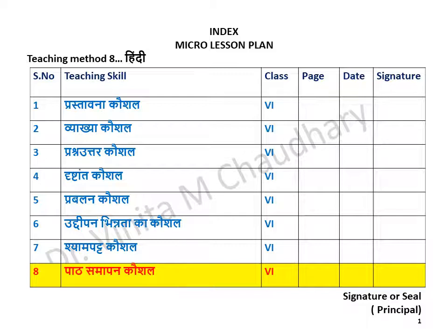Jo samaajik samaapan hota hai, iska sambandh chhatron ko ek vishesh upalabdhi pradaan karne se hai, taaki paath ke bheetar kisi bhi kathinaai ka saamna karne ke baavajood unhe prayas jaari rakhne ke liye protsaahit kiya ja sake. Samaapan aam taur par keval ek paath ke ant mein ya vishesh roop se jab seekhne ka kram zyada kathin ho, to uske ant mein upyog kiya jaata hai.